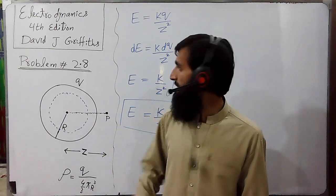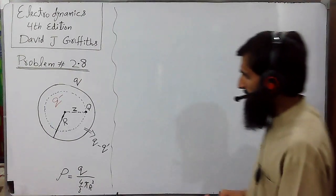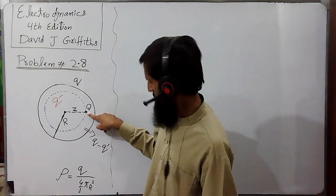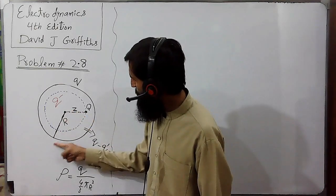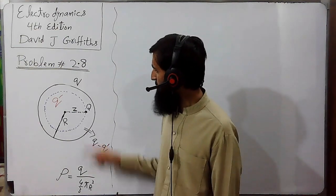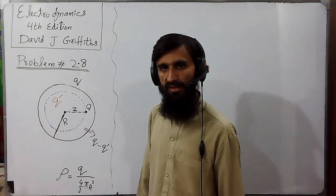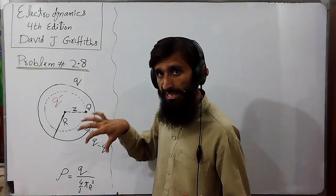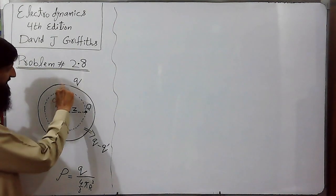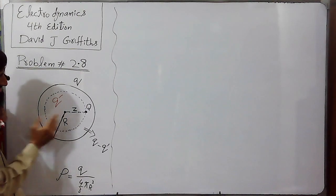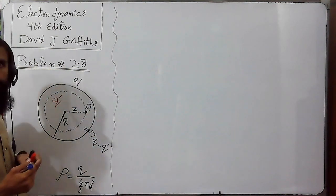Now let's calculate the electric field at some interior point. Let me draw a figure first. We are calculating the electric field at an interior point Q, at a distance z from the center of the sphere, while the radius of the sphere is capital R. I have drawn a spherical shell passing through point Q. The charge contained by this shell and its interior is named Q dash, while the rest of the charge outside this shell is Q minus Q dash, where Q is the total charge of the sphere.